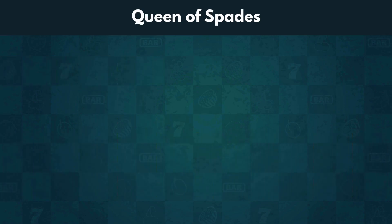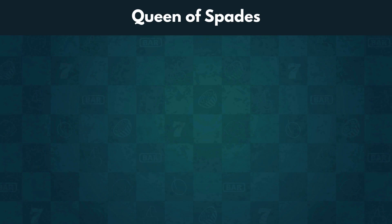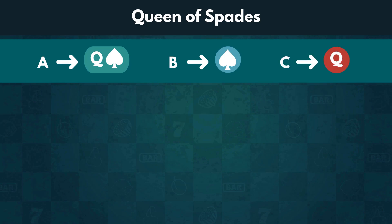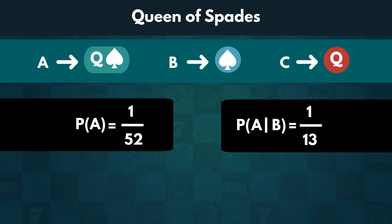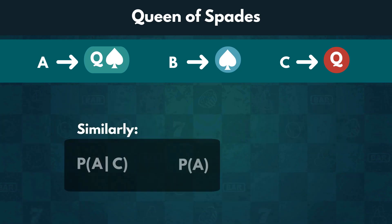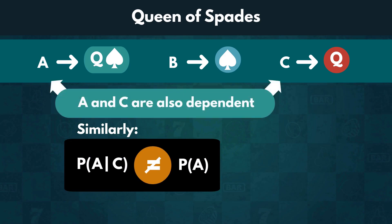Now, let us examine the Queen of Spades example, where A represented drawing the exact card, B represented drawing the correct suit, and C represented getting a queen. Normally, the probability of drawing the Queen of Spades is equal to 1 over 52. However, it increases if we know it's a spade, since P of A given B is 1 over 13, and P of A is 1 over 52. We can say the two events are dependent. Similarly, because the probability of drawing our desired card alters if we know it is a queen, we can say A and C are also dependent.